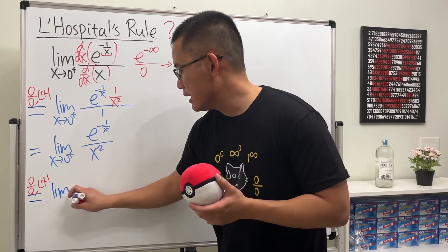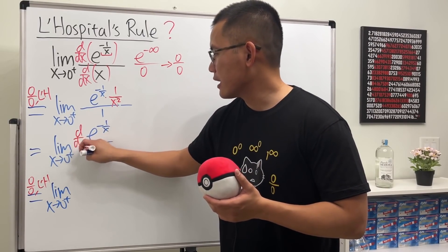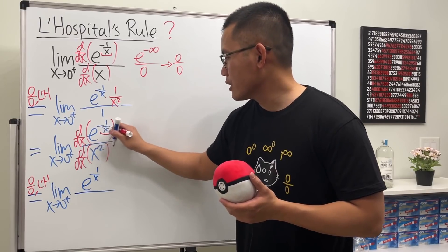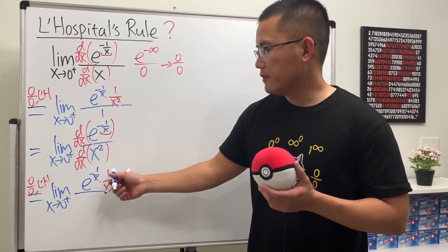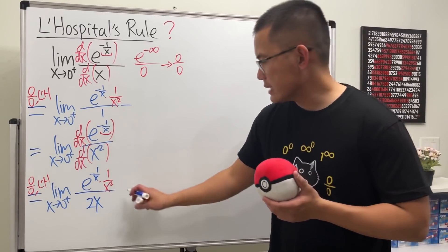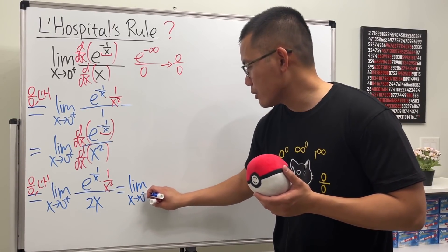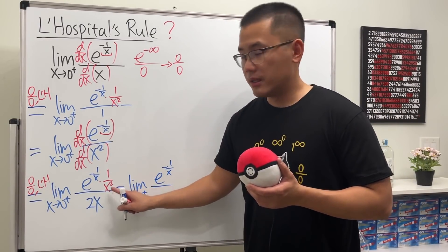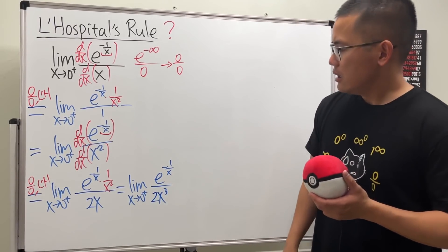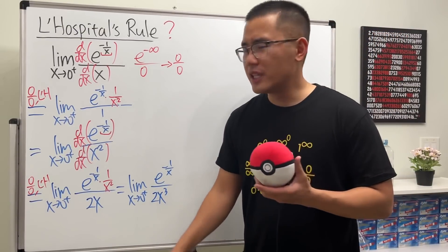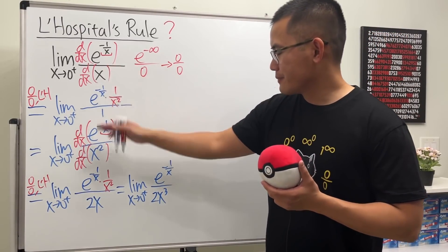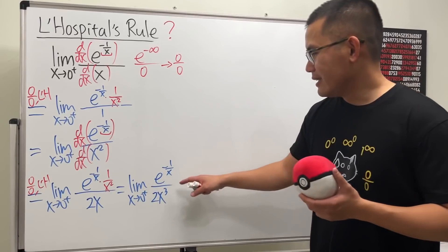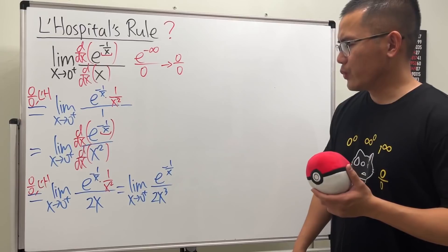0 over 0 — L'Hôpital's rule one more time. This is the limit as x approaching 0 plus. Differentiate the top and the bottom. On the top we get e to the negative 1 over x multiplied by 1 over x squared, and the derivative of x squared is just 2x. So altogether we have e to the negative 1 over x over x squared on top, over 2x on the bottom — giving us 2x to the third power in the denominator. Originally we just had x to the first power, and now the denominator is 2x to the third. It got bigger.